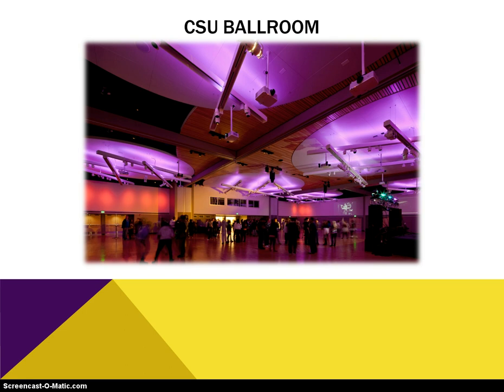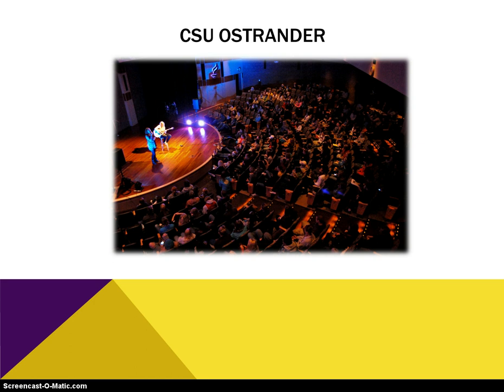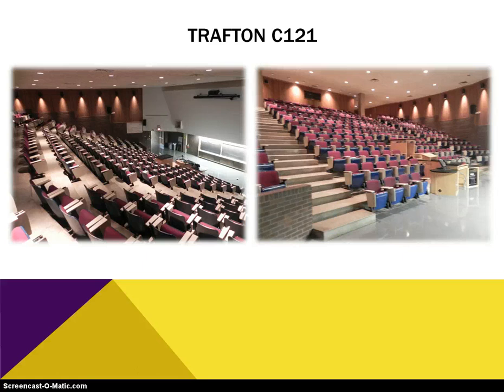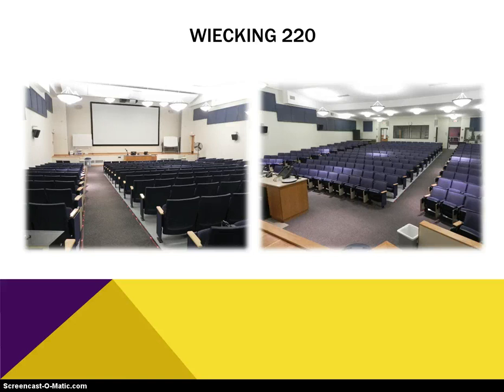Finally, make sure you're not exceeding max capacity. Some of the primary places you can reserve: the Centennial Student Union Ballroom fills up very quickly, so get the priority deadline from Event and Meeting Services a semester in advance. CSU Ostrander is great for small performances, movies, speakers, and lectures — it seats a little over 300 and has lots of audio-visual technology already in there; it was recently renovated. Trafton C-121 can fit a large number of people, a bit more than Ostrander, and works well for formal lectures or performances — typically available after business hours. And Weeking 220 works well for presentations and large lectures.